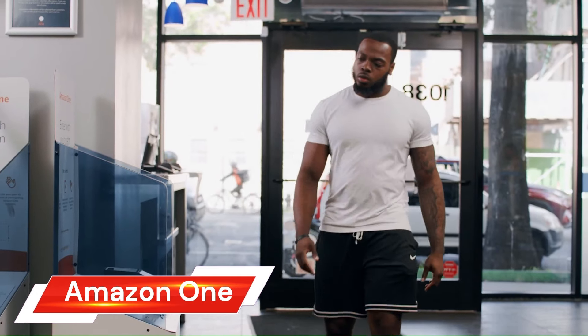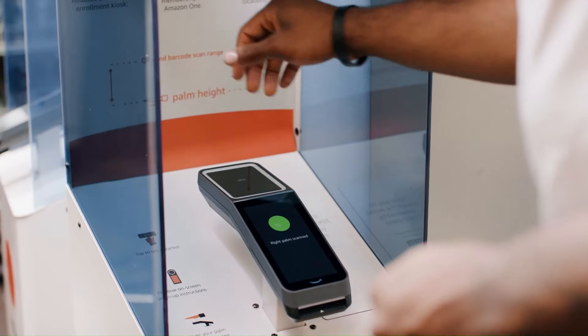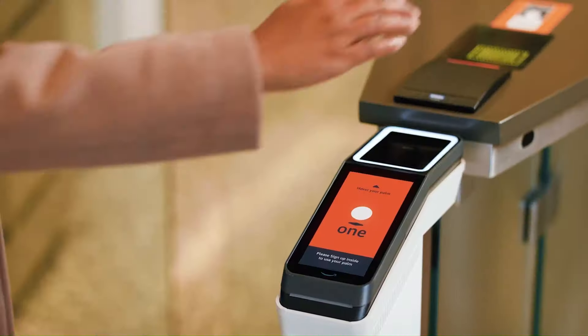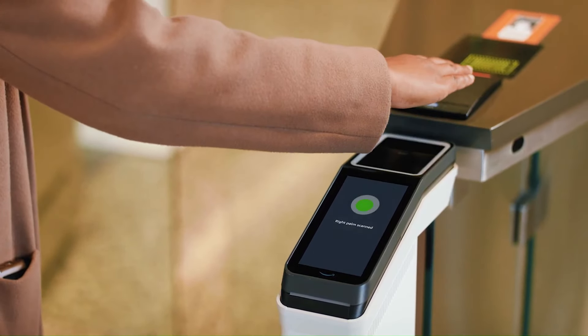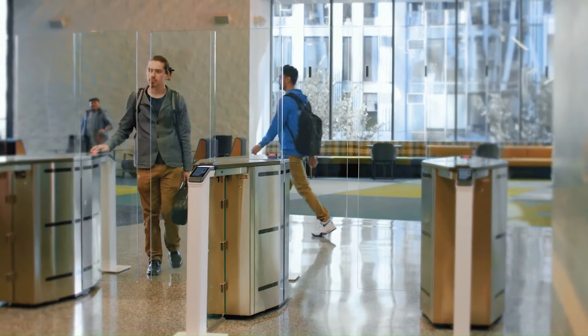Amazon One is a contactless payment and identification system that uses palm recognition technology. It allows you to pay for goods and services, enter buildings, and identify yourself by simply hovering your palm over a reader.